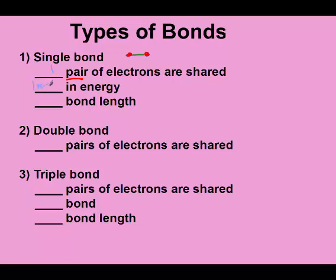So lowest in energy, longest bond length. They're the easiest to break. A double bond is represented like so.